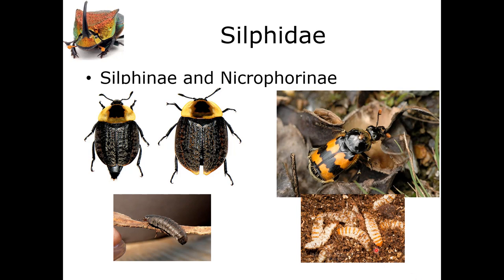The Nicrophorinae larvae have a cluster of six ocelli on either side of their head, and they're sporadically sclerotized — parts on the dorsal surface are sclerotized in the center, but the rest are very squishy. They're not fully armored like the Silphinae. The adults also have this very large pronotum, with clubbed antennae. The elytra are shorter than the abdomen, so they don't cover the full abdomen — notice that in the Silphinae, they fully cover the abdomen.